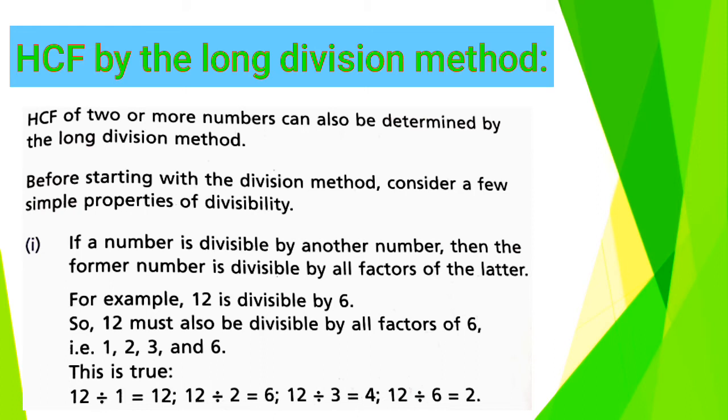12 is divisible by 6. So, 12 must also be divisible by all factors of 6, such as 1, 2, 3 and 6. This is true: 12 ÷ 1 = 12; 12 ÷ 2 = 6; 12 ÷ 3 = 4; 12 ÷ 6 = 2. According to the first property, in short, we can say that 12 is divisible by 1, 2, 3 and 6.